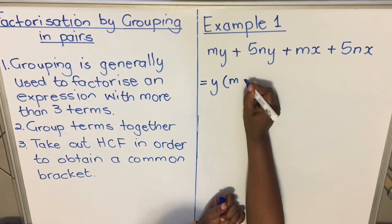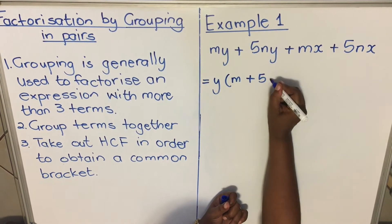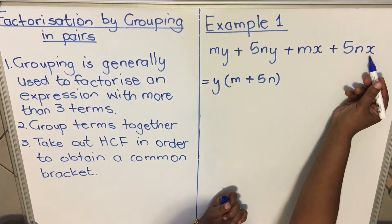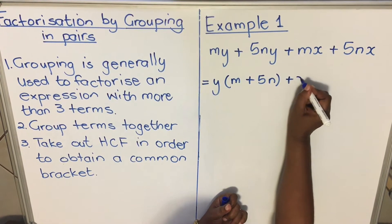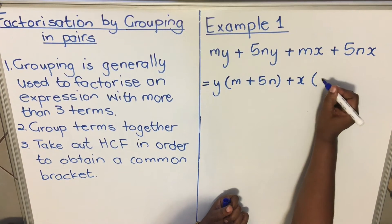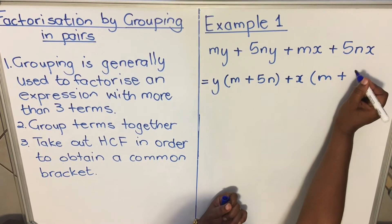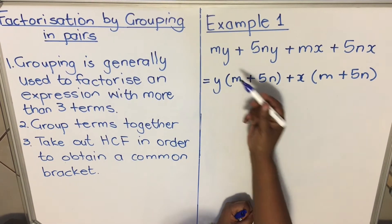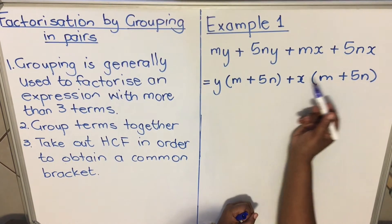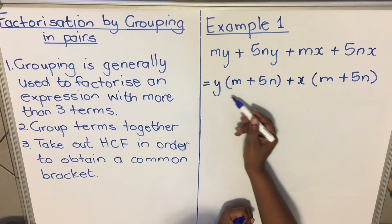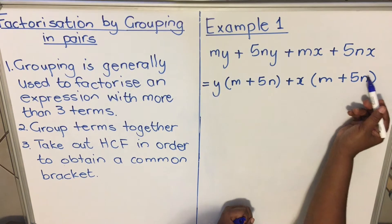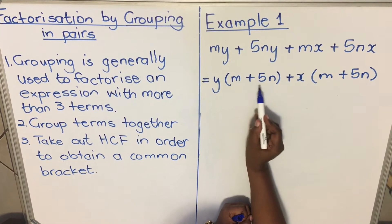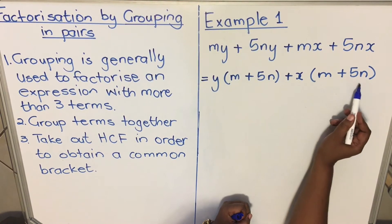Then the next group, our common factor is x, so it's plus x times (m + 5n). Now you have two terms. You started with four terms. When you take out the common factor, this is one term and this is the other term. Now when you look at these terms, there's a common bracket: m + 5n appears in both.